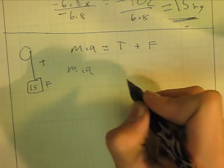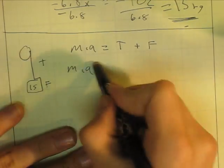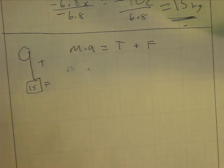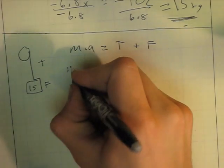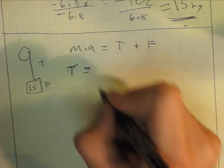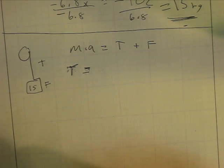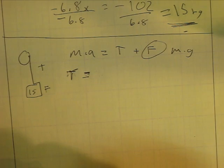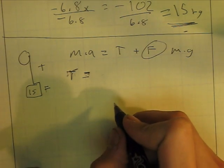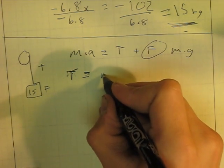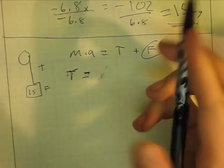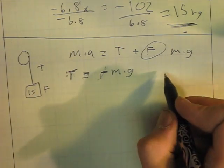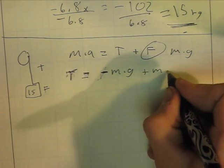So mass times acceleration, actually no, hold on. Before I start plugging in numbers and stuff, I'm going to actually make this a better formula. So I'm going to write it as T because we're solving for T. So T equals this force right here, which is mass times gravity. So T is going to equal, hold on, my bad, sorry, T is going to equal negative M times G plus M times A.